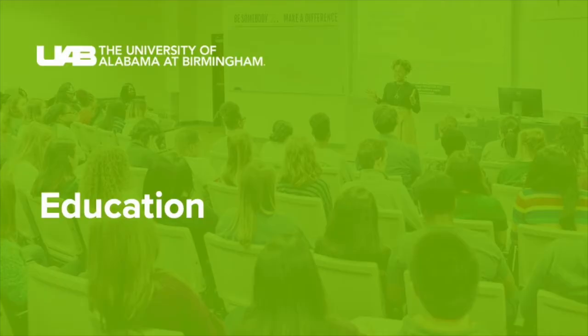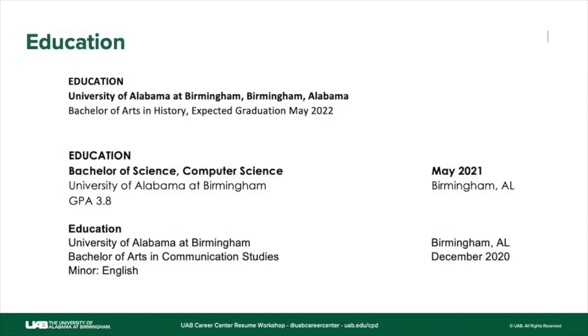Moving on to education — this is really important. This is where you start to get into the correct format with reverse chronological order, starting with your current or most recent school. As students at UAB, you want to make sure that you're spelling out University of Alabama at Birmingham. You also want to make sure that you spell out Birmingham, Alabama.